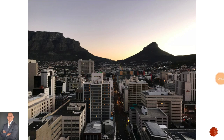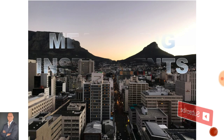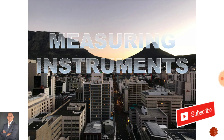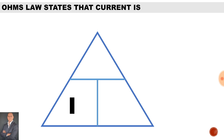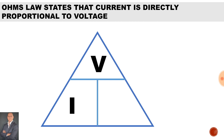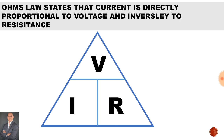Welcome back to another lesson for N3 Electro Technology. We're going to be looking at a calculation for measuring instruments. It's important to note that there is no formula available to us in the formula sheet, therefore we're going to be using Ohm's law. Ohm's law states that the current in a circuit is directly proportional to voltage and inversely proportional to resistance.